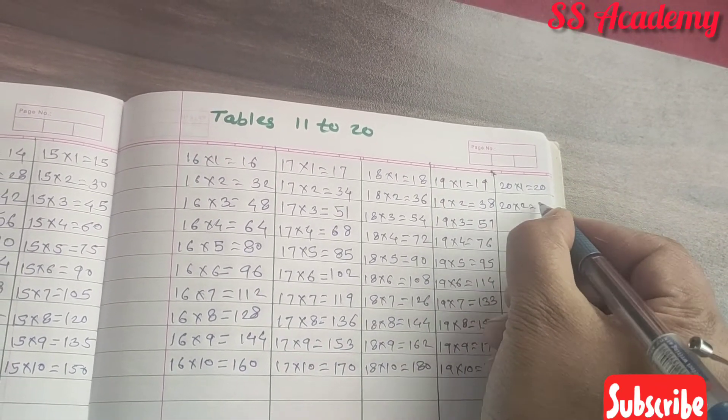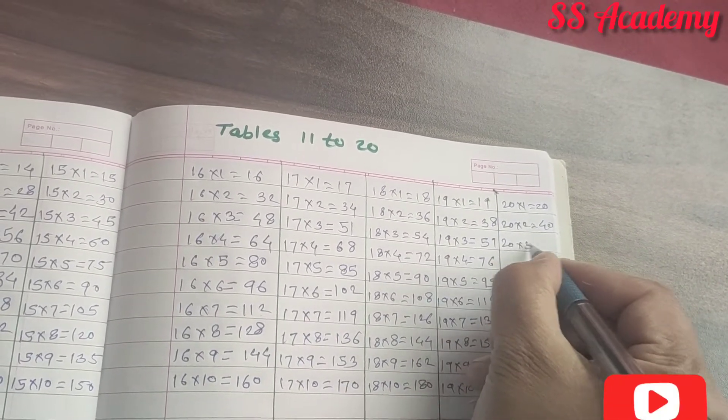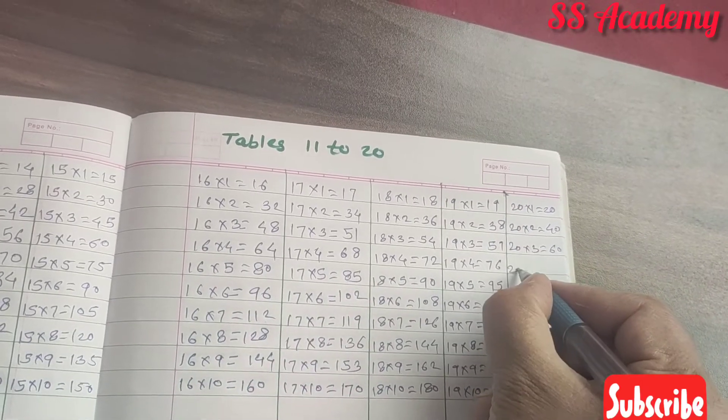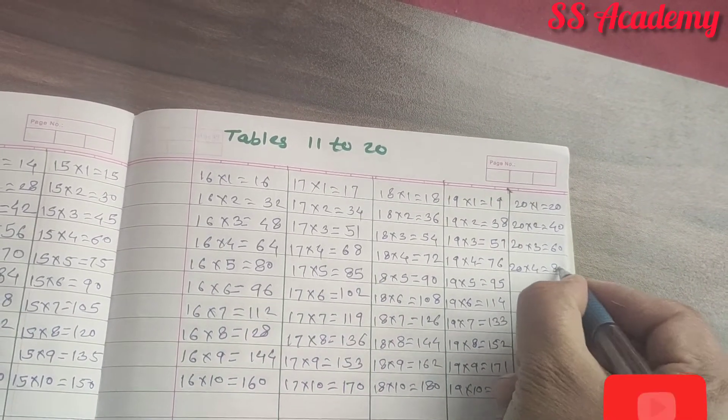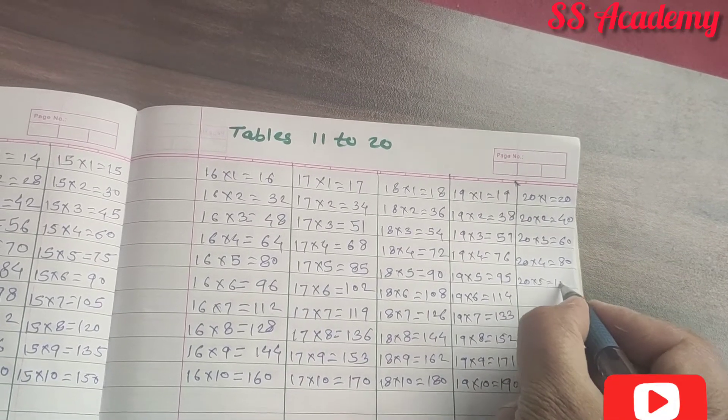Last, 20. 20 times 1 is 20. 20 times 2 is 40. 20 times 3 is 60. 20 times 4 is 80. 20 times 5 is 100.